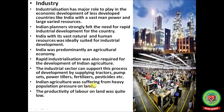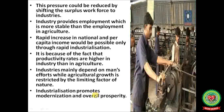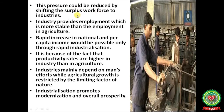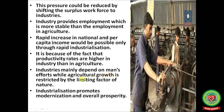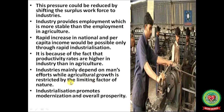Indian agriculture was suffering from heavy population pressure on land, and the productivity of labour on land was quite low. This pressure could be reduced by shifting the surplus workforce to industries, where employment is more stable than in agriculture. Rapid increase in national and per capita income would be possible only through rapid industrialization, since productivity rates are higher in industry than in agriculture. Industries depend mainly on man's efforts, while agricultural growth is restricted by limiting factors of nature. Industrialization promotes modernization and overall prosperity.